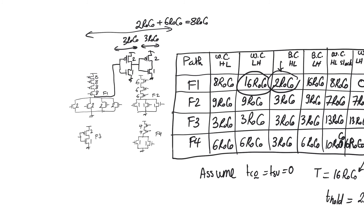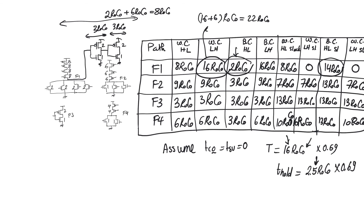The problem is that solving the hold time violation can create a new setup time violation. The added delay affects F1 for all cases, not just the best case. For the low-to-high delay which was 16 R0C0, the new delay becomes 16 + 6 = 22 R0C0, which exceeds the clock cycle and creates negative slack — a setup time violation. The issue is that the combinational delay we add affects both best case and worst case simultaneously, so fixing one timing violation can create another.